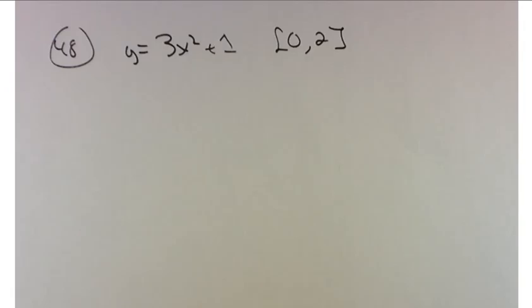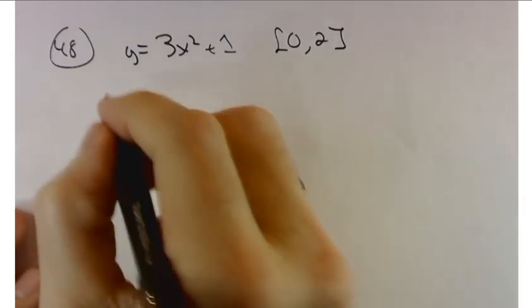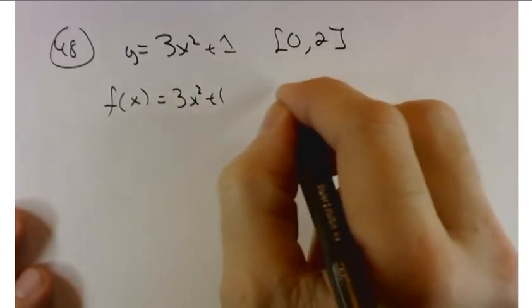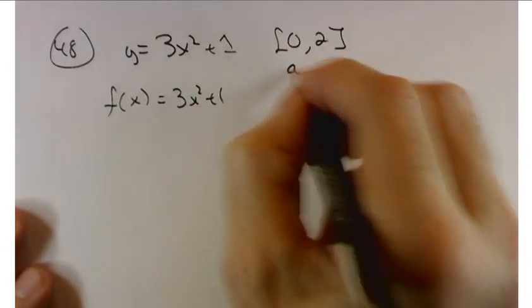Find the area underneath the curve 3x² + 1 between 0 and 2. It might be helpful to think of this as f(x) = 3x² + 1. 0 and 2, that's going to be your a and b.